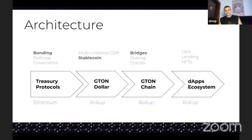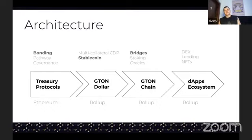In terms of G-Tone chain, we are building our own roll-up solution. We are using and utilizing the technology of optimistic roll-ups from Optimism. But the difference is that as a gas currency, we are not using Ethereum — we are using G-Tone dollar, which is a collateralized stablecoin.